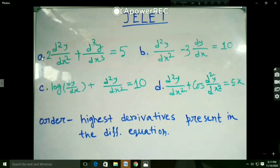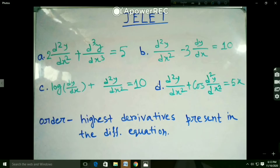These are some examples of differential equations. Number A and number B are differential equations. In number C, log is present, and this kind of equation is not called a differential equation because it is not a polynomial of dy by dx. And in number D, cosine is present, and here we cannot find the degree of this equation.